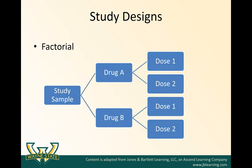Another design is a factorial design, where you have many different factors you're testing. Instead of just testing whether drug A is better than drug B, you might also have two doses of each drug, so you end up with four groups of subjects. Drug type is one factor and dosage is a second factor. You can add more factors, but as you add them you need to increase your overall sample size, because dividing groups further results in smaller numbers in each cell.